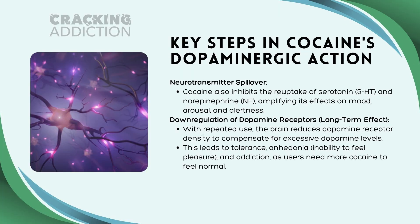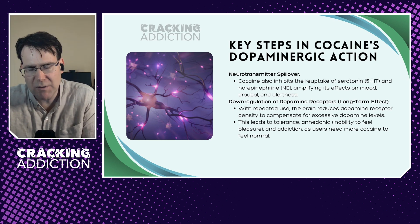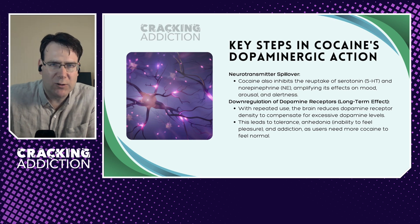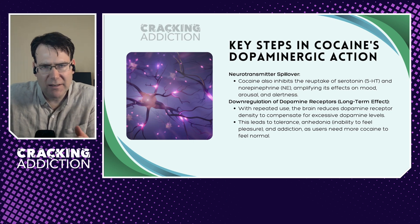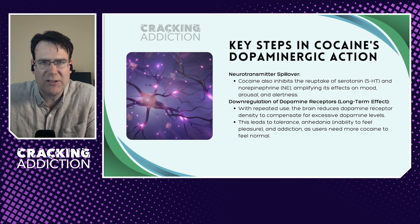Cocaine also inhibits the reuptake of serotonin and norepinephrine, amplifying their effects and causing changes in mood, arousal, and alertness. Too much of a good thing is always a bad thing — when you overstimulate a postsynaptic dopamine receptor, you get downregulation of that receptor. This is a longer-term effect. With repeated use, the brain reduces dopamine receptor density to compensate for excessive dopamine levels. This translates clinically into tolerance, anhedonia — the inability to feel pleasure — and addiction.